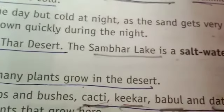Due to the sandy soil and scarce rainfall, not many plants grow in the desert. Some plants found here include cactus, babul, and date palms. Dust storms are also common here, as there is little vegetation to keep the soil from being eroded. These strong dust storms carry dust and sand over a large area.